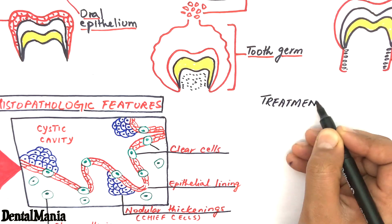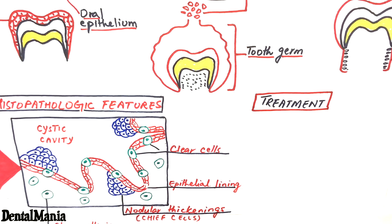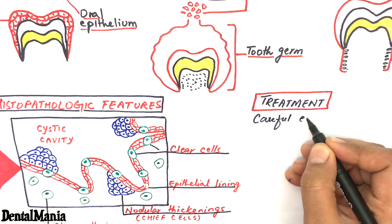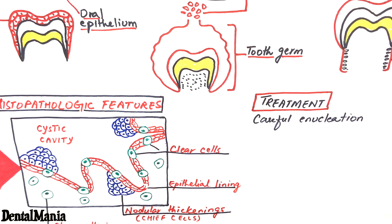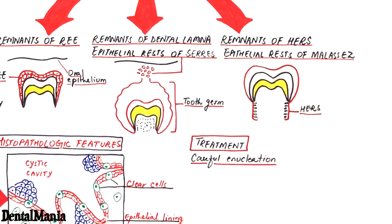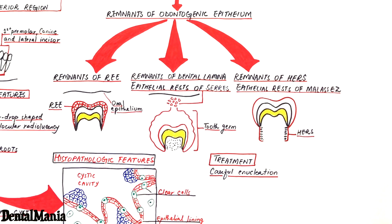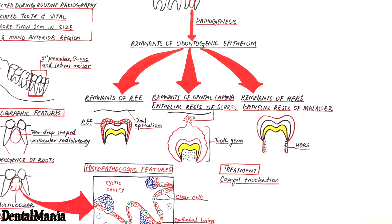The treatment for lateral periodontal cyst is careful enucleation of the cyst, and this process can be accomplished without damaging the involved tooth. If you found this video helpful, please like, subscribe, share, and comment your questions and suggestions. Thank you for watching.